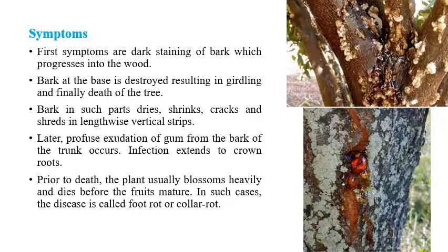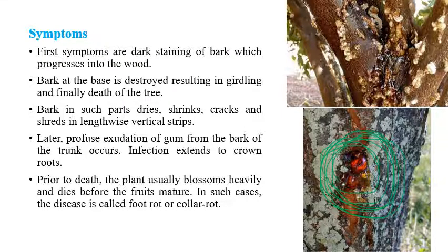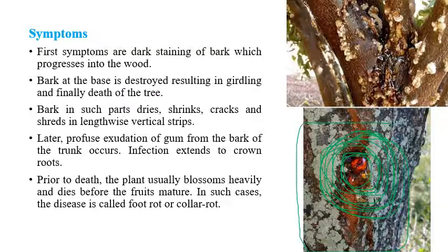The major symptoms of gummosis include exudation of a gummy substance from the bark of the trunk. The infection later extends to the crown region. The stem or bark region slowly starts to dry, and shrinking, shriveling, and cracking of the bark can be seen. In later stages the plant will die, and prior to death the plant usually produces a heavy bloom — more blossoms than normal. The production of gummy exudate is the major and characteristic symptom, as the name 'gummosis' indicates.